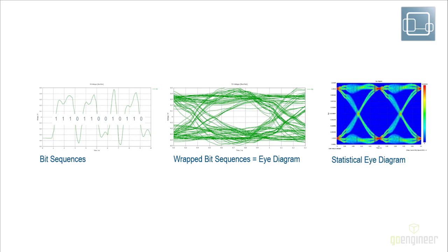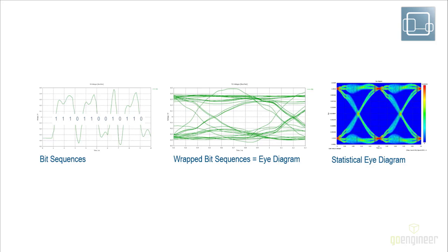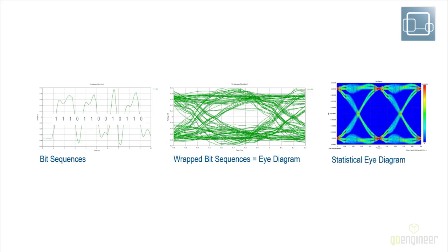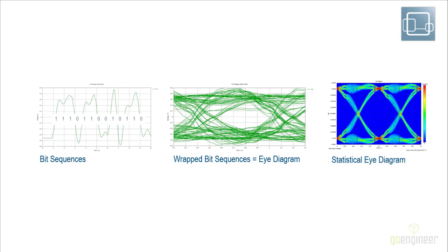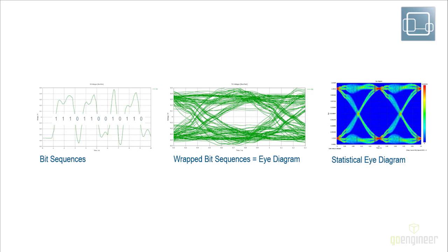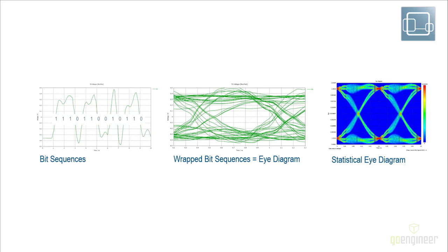This pseudo-random bit sequence is sent at the driver's side and arrives at the receiver. We then compress all the bits into one time bit — like compressing an accordion — to obtain what we call the eye diagram. If the eye diagram is closed, that means you cannot go at the speed you wanted, because the rise time is insufficient and the transmission cannot support 500 megabits per second. You have two options: go lower in bit rate — say 200 megabits per second — or simulate and solve your signal integrity problem.